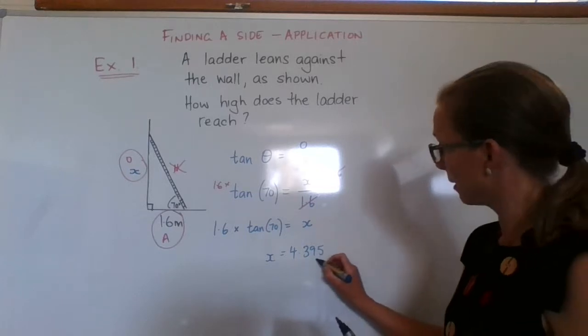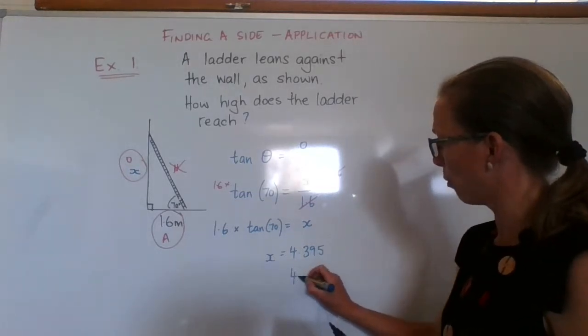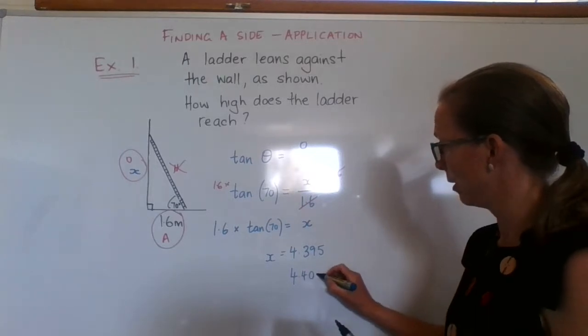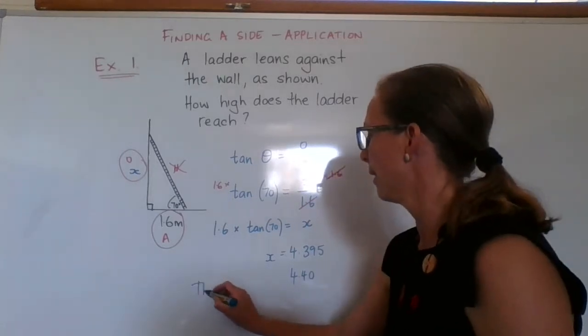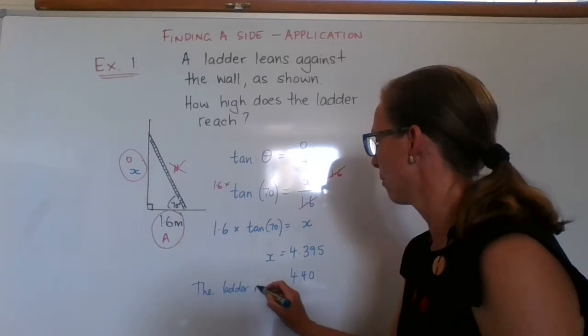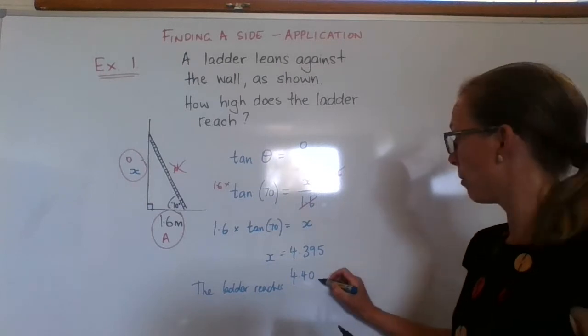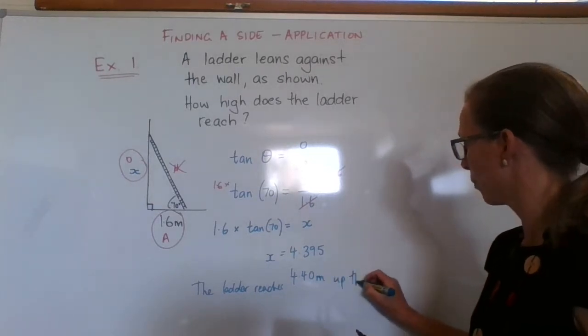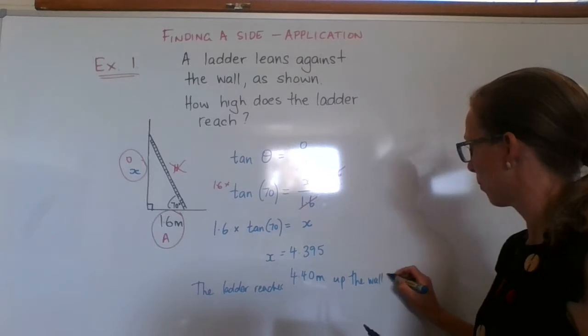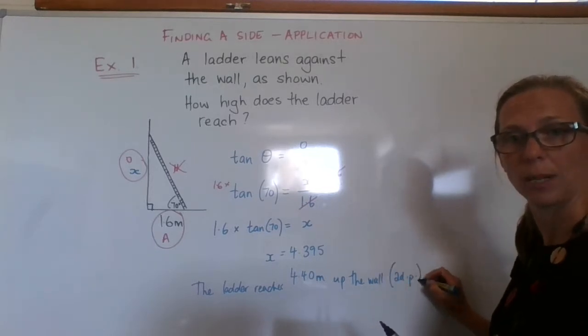So we're going to round it to two decimal places. So this 5 makes the 9 go up, so 4.40, right? The ladder reaches 4.40 meters up the wall. And always write down what you've rounded it to, to two decimal places.